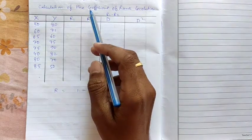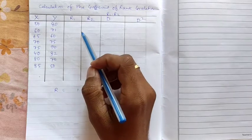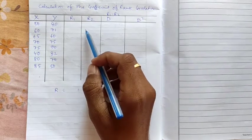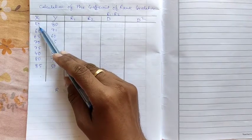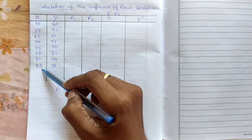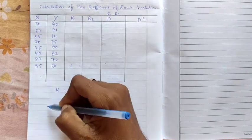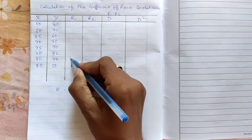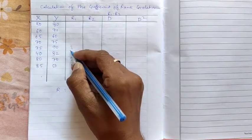So as the name itself suggests Rank Correlation, so here we need to give ranks. We need to give ranks. Ranks like suppose here which is the highest number in x. Suppose here 85 is the highest number. So here 85 will be awarded as rank 1. Then 80 rank 2. 75 rank 3.